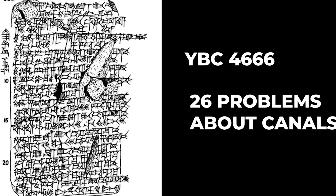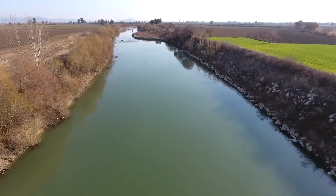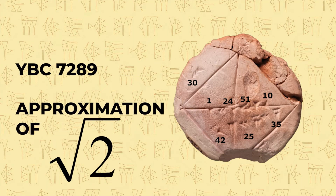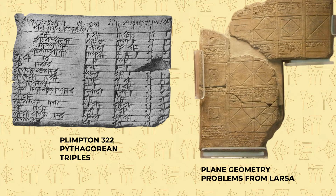Tablets YBC 4666 and 7164 are all written in Sumerian and deal with problems involving the digging of canals. Other tablets about similar topics were written in Akkadian. Some of these problems start off quite simple but quickly become more complicated. Tablets were recovered that show a vast knowledge of quadratic equations, cubic equations, and the use of the Pythagorean theorem — over a thousand years before the Euclidean school or Pythagoras was even born.